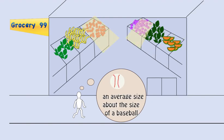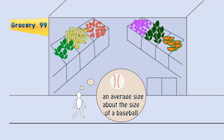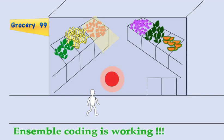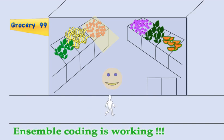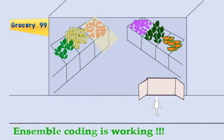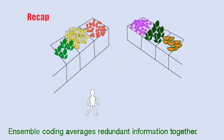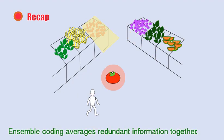The items are an average red color and an average size, about the size of a baseball. By this brief glimpse, Sam has enough information to determine if the store is selling tomatoes, and he is one step closer to his delicious Italian dinner.